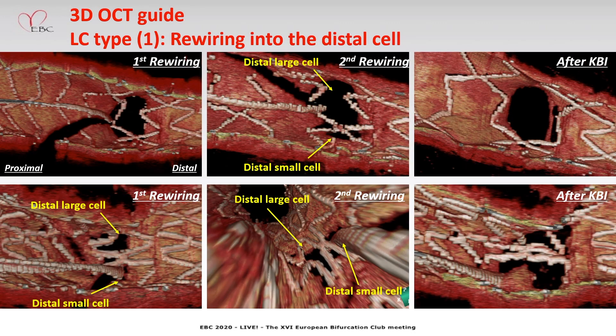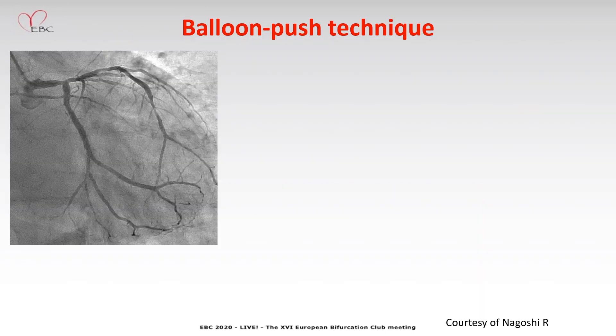These are the 3D OCT guidance cases in link-connecting type. In the upper case, here you can see link connection at the side branch ostium. We recrossed the guidewire in the larger cell. In the second attempt, we performed final kissing balloon inflation. Fortunately, wide opening was achieved; however, the link connection still remains at the center of the side branch ostium. In the lower case, guidewire recrossing into the distal smaller cell — we performed final kissing balloon inflation at high atmosphere; however, link connection still remains at the center of the side branch ostium. Another option is the balloon push technique.